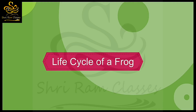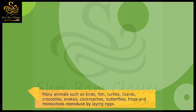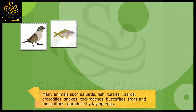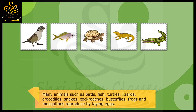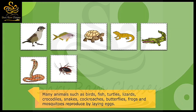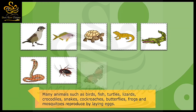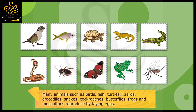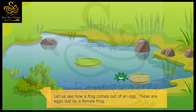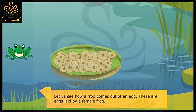Life Cycle of a Frog. Many animals such as birds, fish, turtles, lizards, crocodiles, snakes, cockroaches, butterflies, frogs and mosquitos reproduced by laying eggs. Let us see how a frog comes out of an egg.